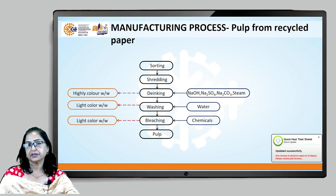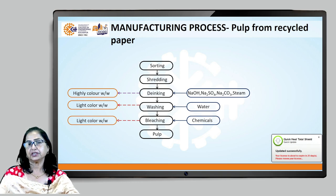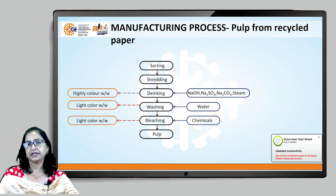The deinking process is somewhat similar to the digestion process, but here the cellulose fiber is already separated — only the other material added during original paper manufacturing is removed. After deinking, the pulp is washed and bleached, and it is then ready for paper manufacturing.